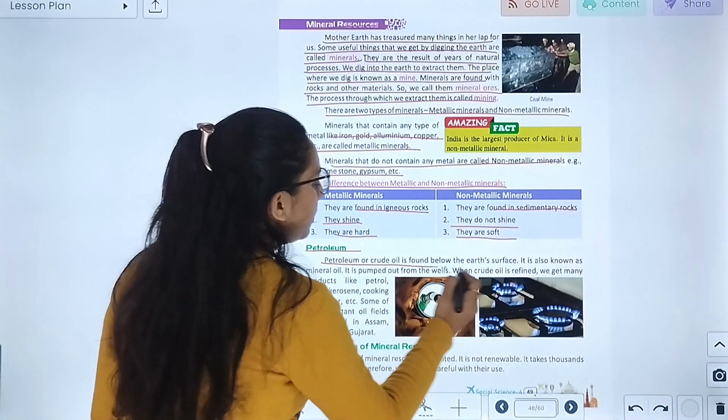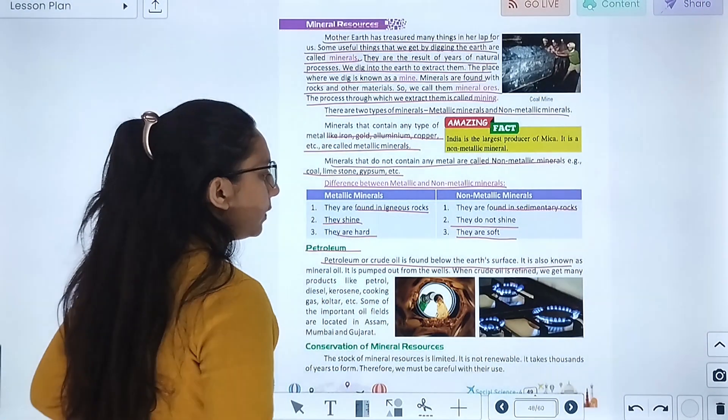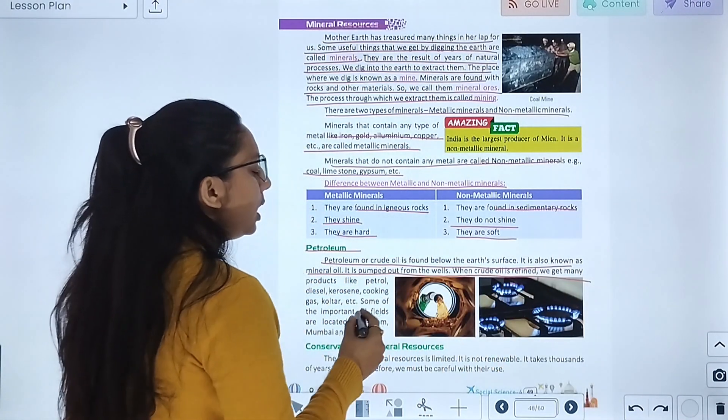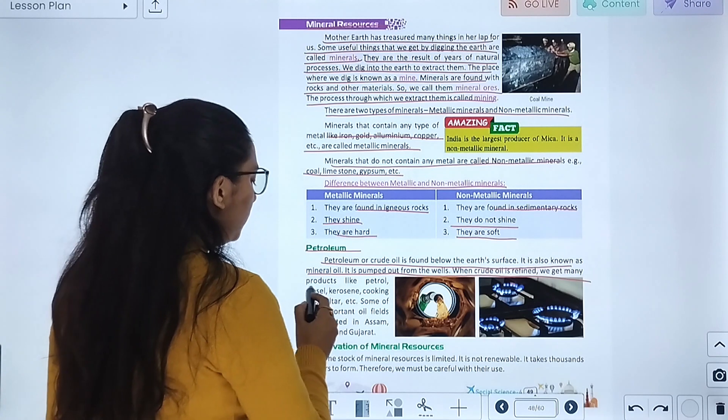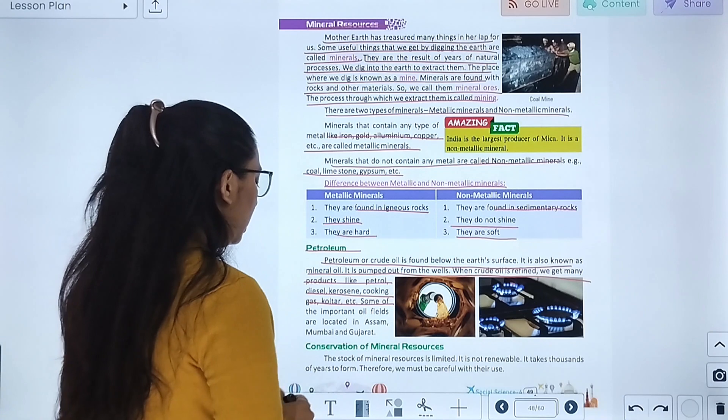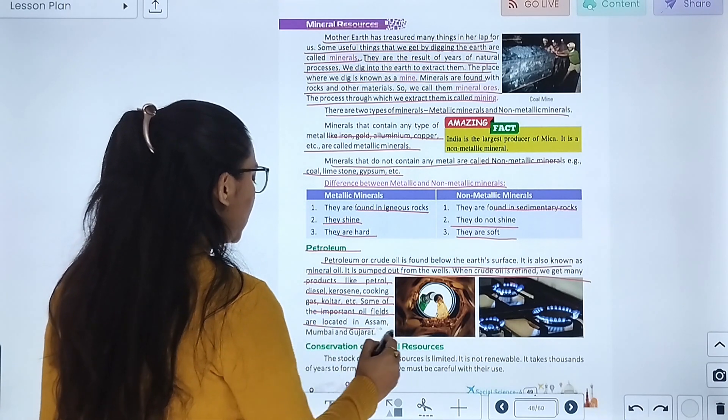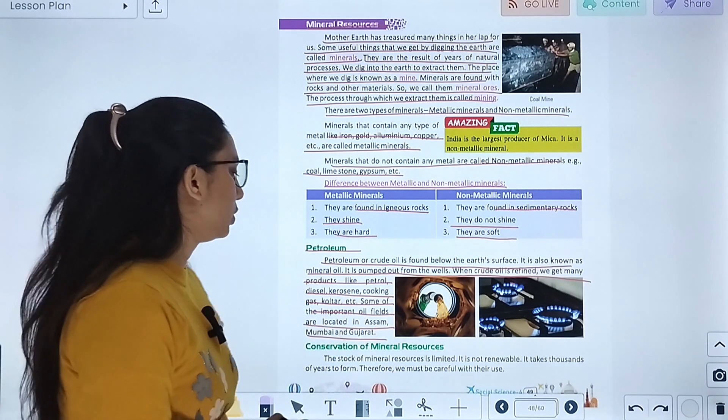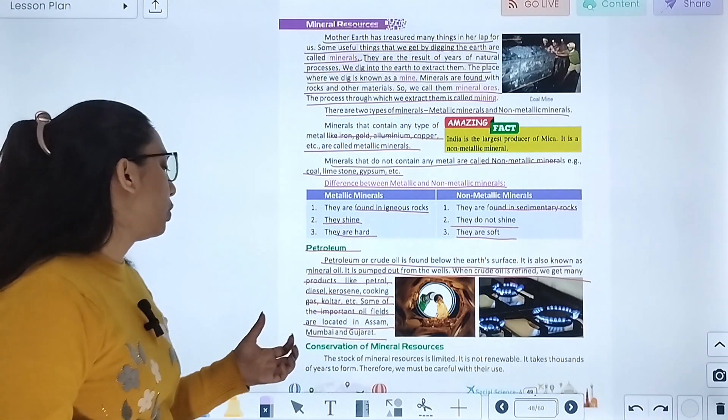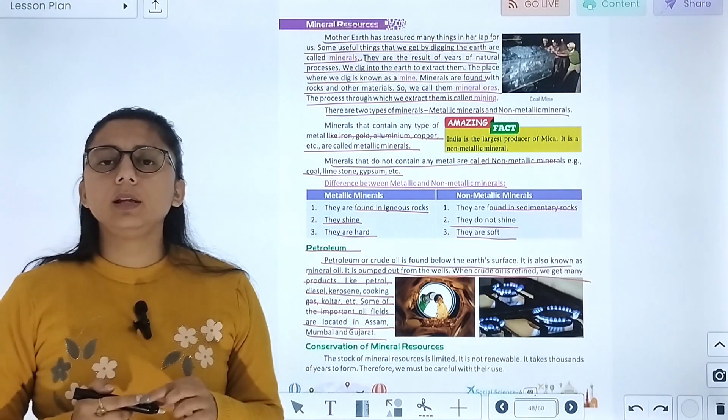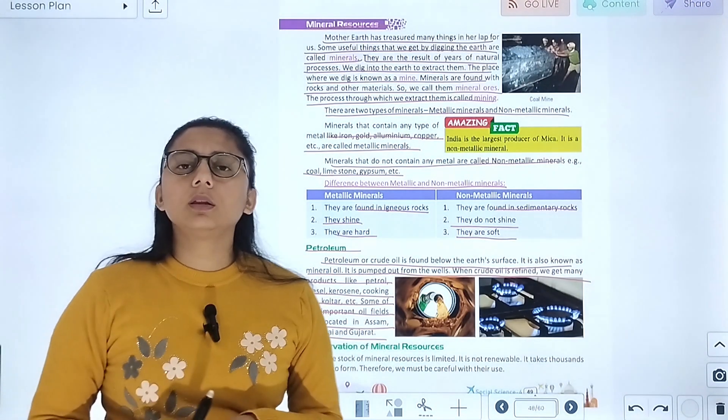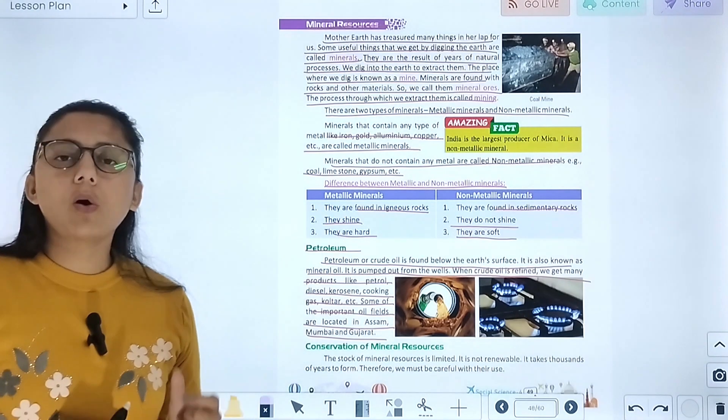Petroleum or crude oil is pumped from below the earth's surface. It is also known as mineral oil. It is pumped out from wells. When crude oil is refined, we get products like petrol, diesel, kerosene, cooking gas, and coal tar. Some of the important oil fields are located in Assam, Mumbai and Gujarat. After we refine them, we get diesel, petrol, kerosene and oil.